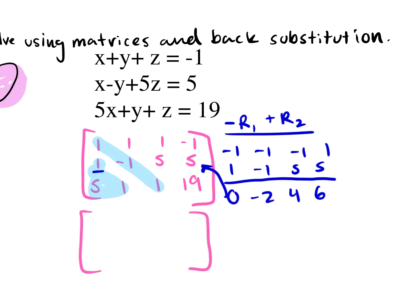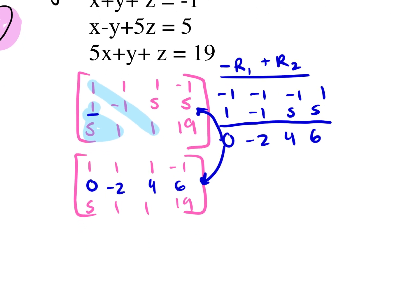Rows one and three stay the same, and row two changes to zero, negative two, four, six. I want to change the five in the first column next because I want to get one, zero, zero in the first column before moving on to the second column.